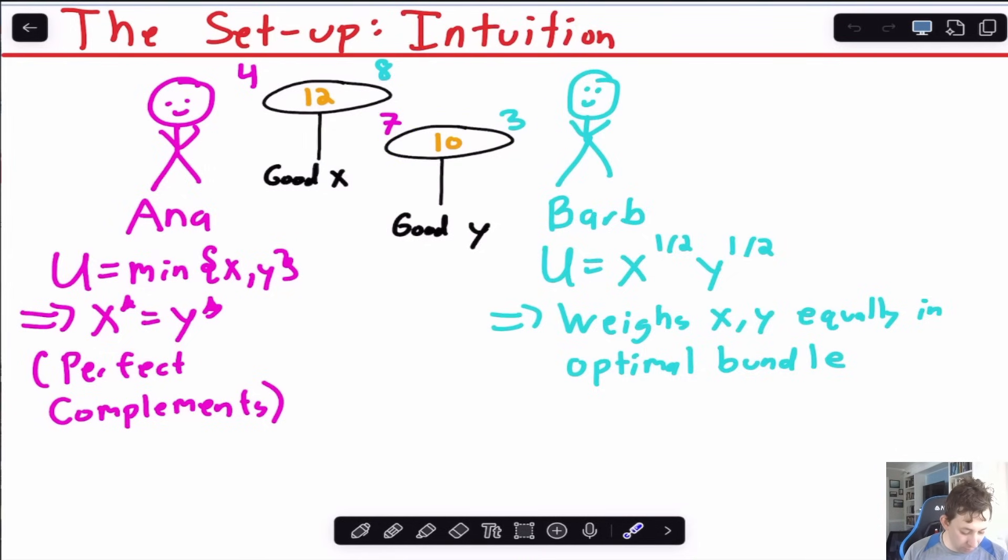If we think about these utility functions a little bit more, Anna has perfect complements utility, that's what that means. So we know that for her, X star is going to equal Y star. For Barb, we know that U is X to the one-half, Y to the one-half, so she weights X and Y equally. We could expect that she would also have X star equals Y star, just from Cobb-Douglas instead of perfect complements.